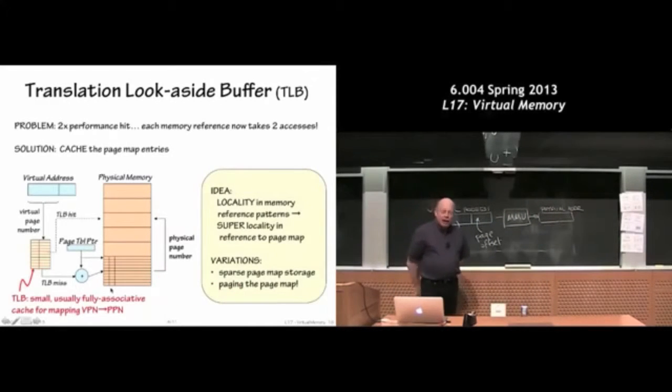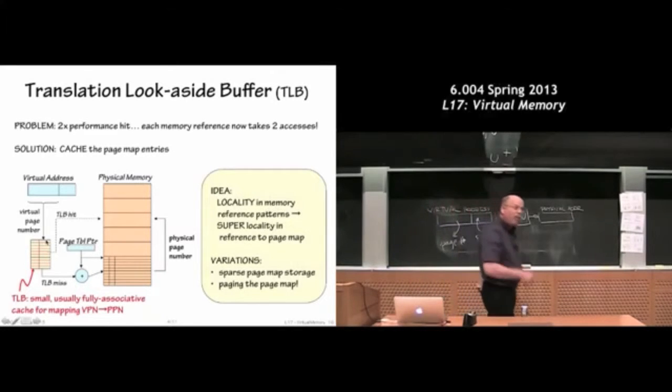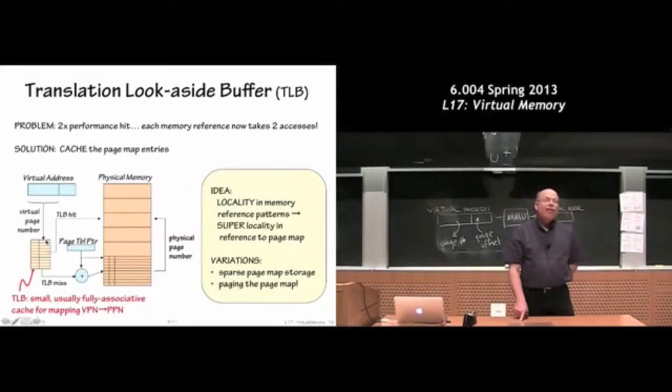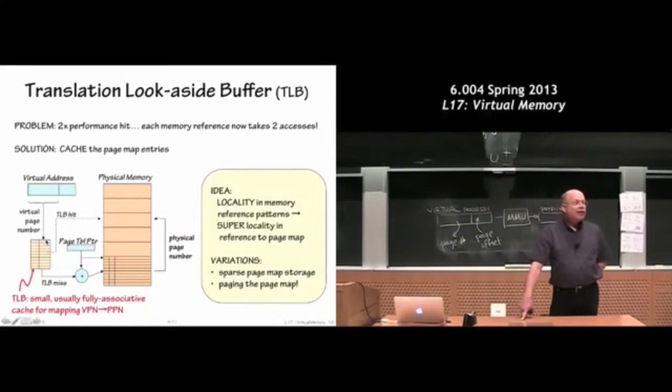OK. So what we're going to do is we're going to create a little cache. It doesn't actually have to be very big. The tag and the data. The tag in the cache is the virtual page number and the data in the cache is the physical page number. So this cache's job is to sort of, if you're going to use a software term, memoize, to sort of remember physical to virtual page number translations for some small number of pages.